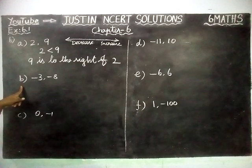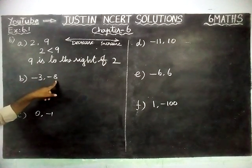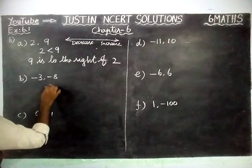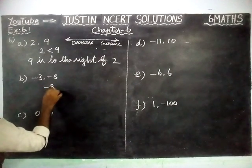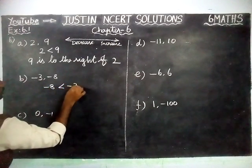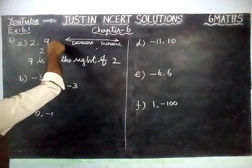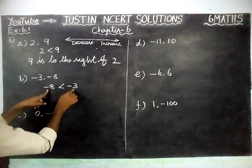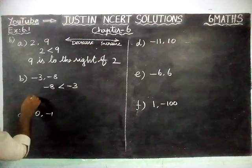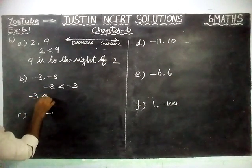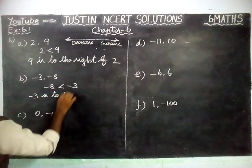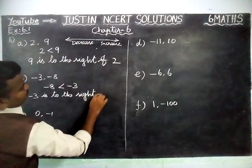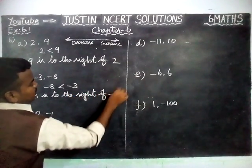Option B: the question is minus 3 and minus 8. According to the number line, minus 8 is less than minus 3. When we are moving left hand side, the value will decrease. Minus 3 is the greatest number. Therefore, minus 3 is to the right of minus 8.